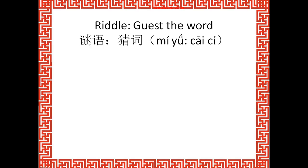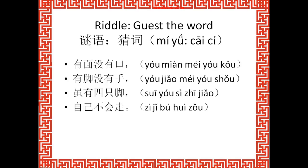Today we're going to try a game — we guess the word. I will read the Chinese first, then later give the English clues, and you will know what it means. So this is called: 有面没有口 (yǒu miàn méi yǒu kǒu), 有脚没有手 (yǒu jiǎo méi yǒu shǒu), 虽有四只脚 (suī yǒu sì zhī jiǎo), 自己不会走 (zì jǐ bú huì zǒu). The first line means: it has a face but no mouth.